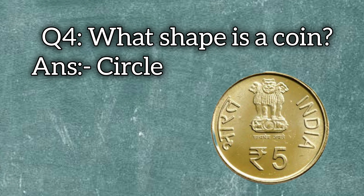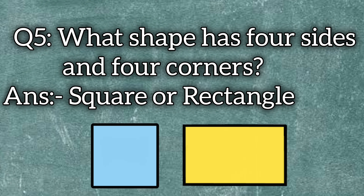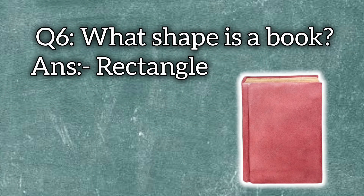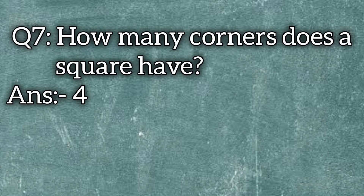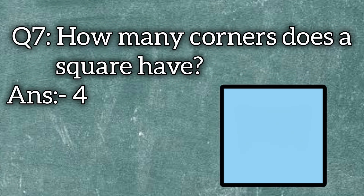What shape is a coin? The answer is circle. What shape has four sides and four corners? The answer is square or rectangle. What shape is a book? The answer is rectangle. How many corners does a square have? The answer is four.